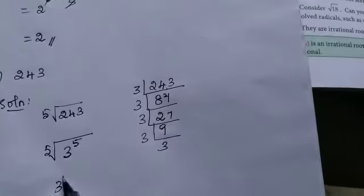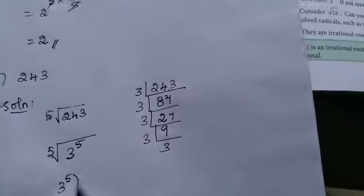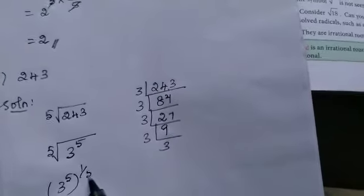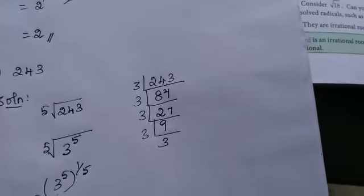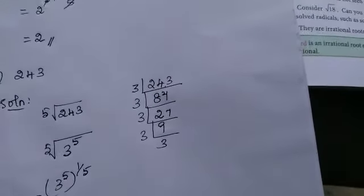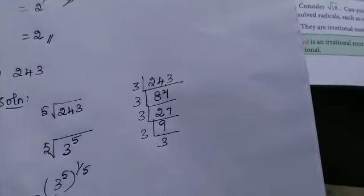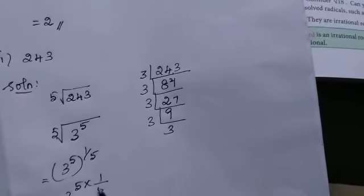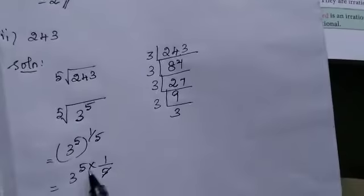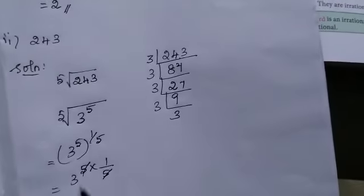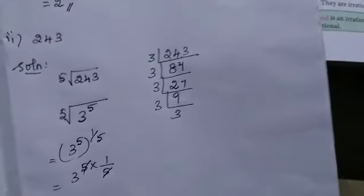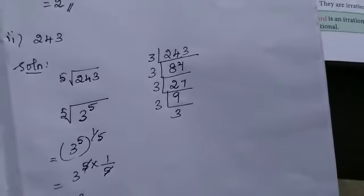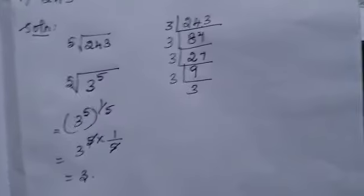Now 3 power 5 — how will you write this? As 3 power 5 into 1 by 5. The 5 and 5 cancel, so what is the answer? 3. This is the answer.